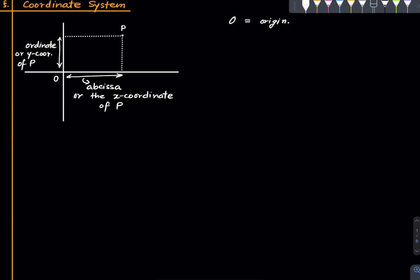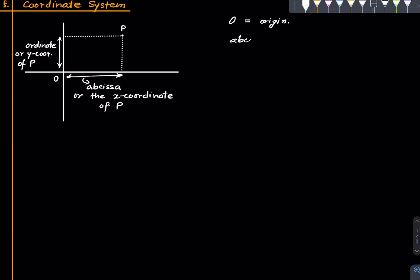When I say signed distance, I just mean that if this point, instead of being here, it would be here — then if you drop the perpendicular, this is towards the left of the origin. So this would be a negative abscissa, and the ordinate is still positive. Here both the ordinate and abscissa are negative. And here the abscissa is positive but the ordinate is negative. So we have these concepts: abscissa and ordinate.